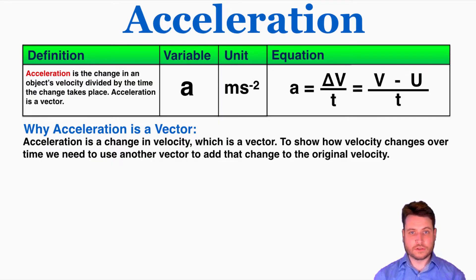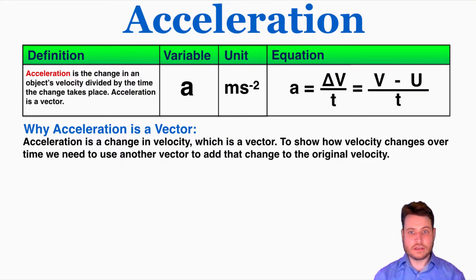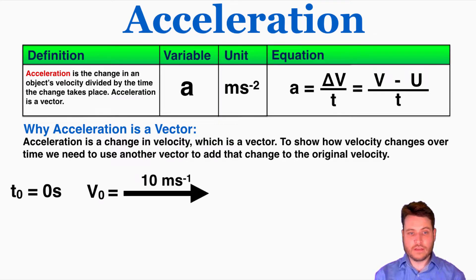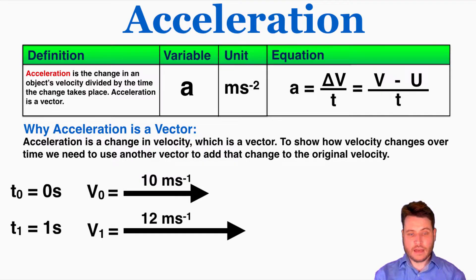Many students are confused about why acceleration is a vector. The reason is that acceleration is a change in velocity, and velocity is itself a vector. To show how velocity changes over time, we need to use another vector to add that change to the original vector. For example, if at time equals zero the initial velocity is 10 meters per second, and after one second the velocity is now 12 meters per second, that vector is that much bigger.